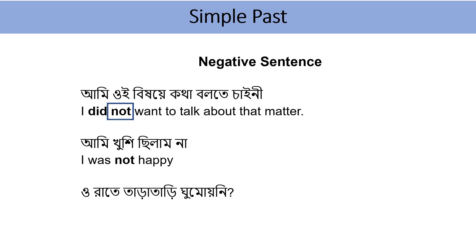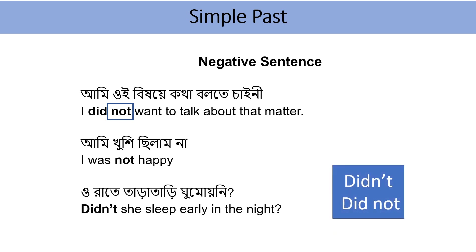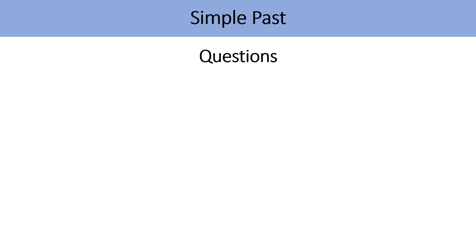ও রাতে তাড়াতাড়ি ঘুমায়নি? — Didn't she sleep early in the night? This is a question. 'Didn't' is the contracted form of 'did not'. So it means: Did not she sleep early in the night? When forming a question, the question word comes first. The correct structure requires 'did not' to come at the beginning. Let's look at a few more question examples.